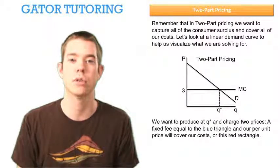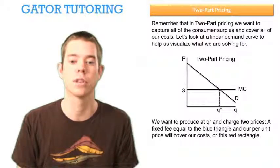We know we want to produce at Q star and charge two different prices, a fixed fee equal to this blue triangle, and our per unit price will cover our cost, or this red rectangle.